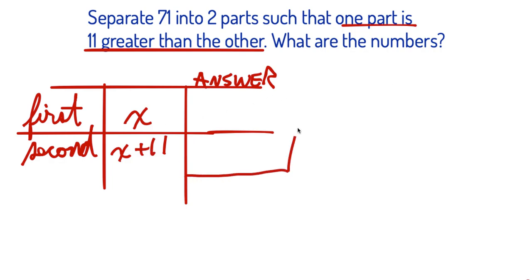So I'm already going to box my answer even though I don't have it yet. I know it's kind of sneaky. So what I'm trying to say is the sum is 71 when I separate it into two parts. So basically I'm saying x plus x plus 11 equals 71.